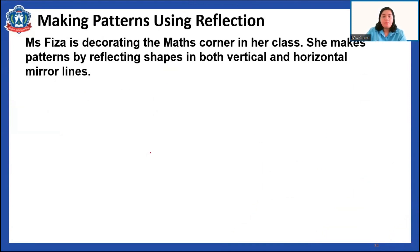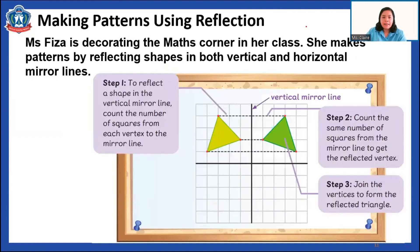Miss Pisa is decorating the math corner in her class. She makes patterns by reflecting shapes in both vertical and horizontal mirror lines. The original shape is the yellow shape. To reflect a shape in the vertical mirror line: step one — draw the line downward and count the number of squares from each vertex to the mirror line. Step two — count the same number of squares on the other side of the mirror line to get the reflected vertex.